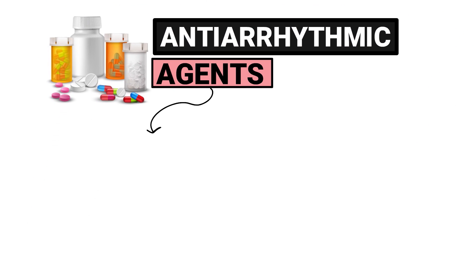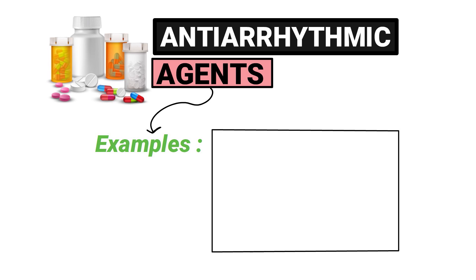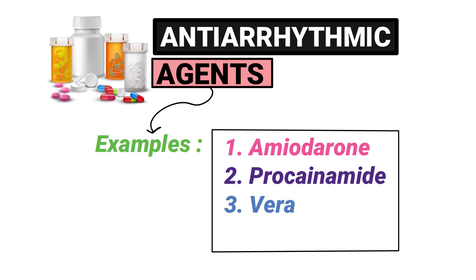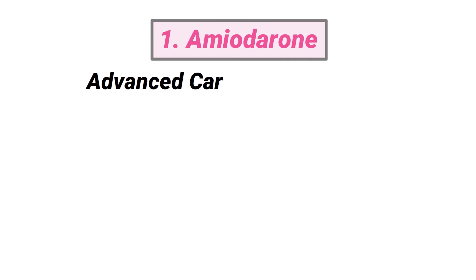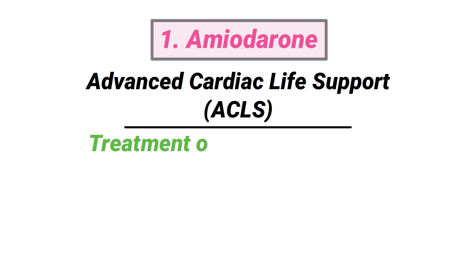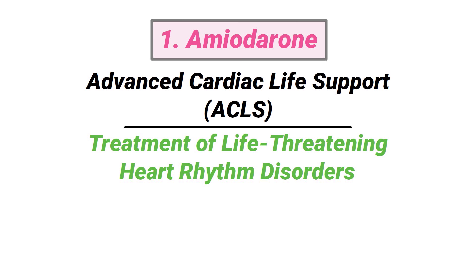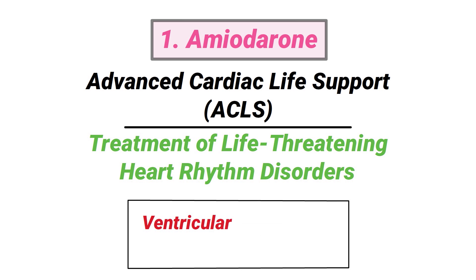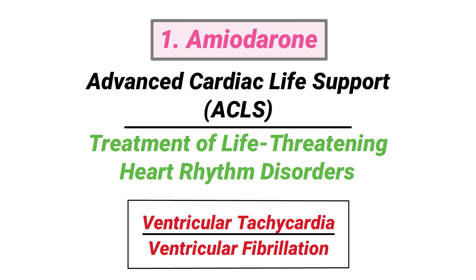Some examples of the most common types of antiarrhythmic agents include amiodarone, procainamide, verapamil, and lidocaine. Amiodarone is a drug that is often administered during ACLS for the treatment of life-threatening heart rhythm disorders. This includes ventricular tachycardia and ventricular fibrillation.